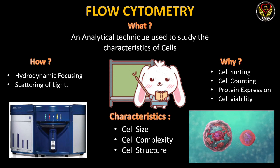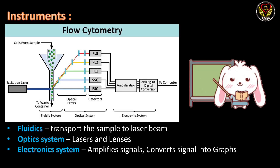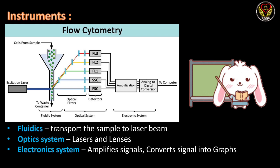How does this technique work? It is based on two major principles: hydrodynamic focusing and scattering of light. Before going into the working mechanism, let's see the major parts: fluidics, optic system, and electronic system. In fluidics, a liquid plays a major role in transporting our sample to the laser beam. The optic system comprises lasers and lenses involved in the analysis. The electronic system receives signals from the optic system, amplifies them, and converts the amplified signals into graphs which can be interpreted by us.